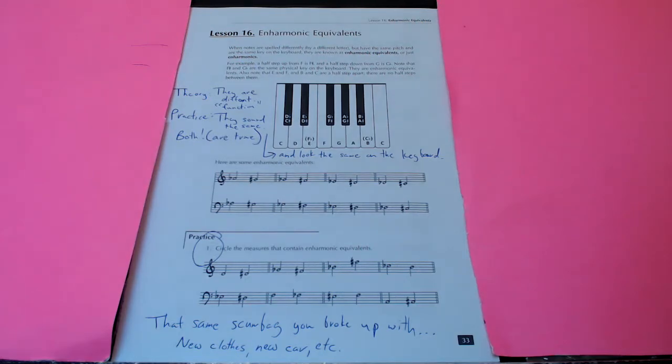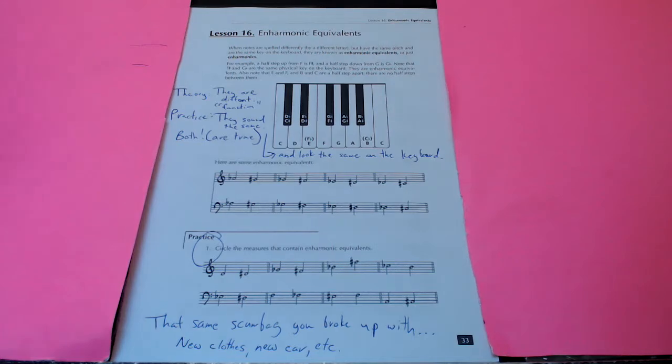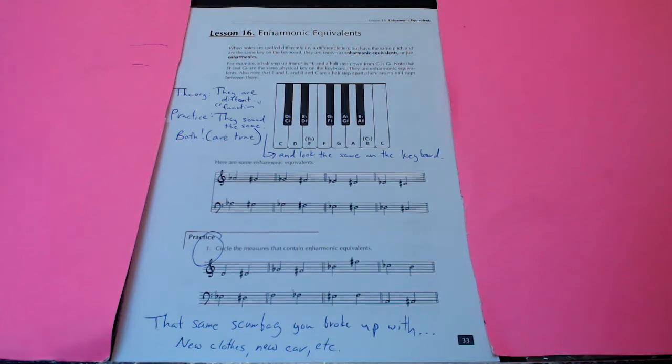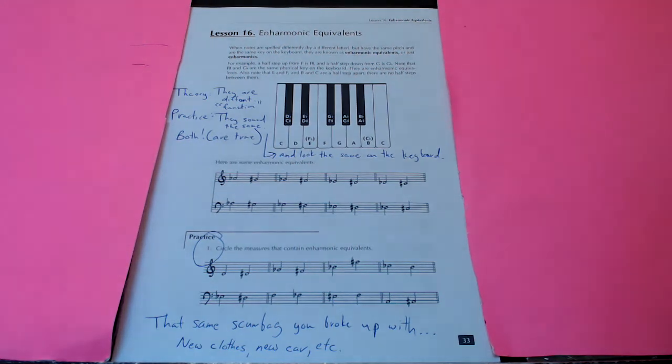For example, a half step up from F is F sharp, and a half step down from G is G flat. Note that F sharp and G flat are the same physical key on the keyboard. They are enharmonic equivalents. Also, notice that E and F and B and C are a half step apart. There are no half steps between them. That's a lot of information.